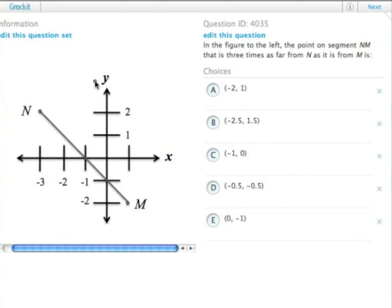So the point on segment NM is three times as far from N as it is from M. It may help to imagine this as a straight line. Imagine that this thing I'm drawing is a straight line.